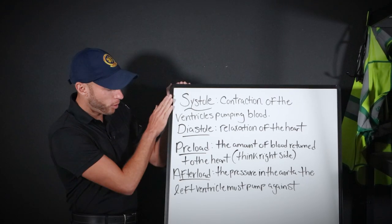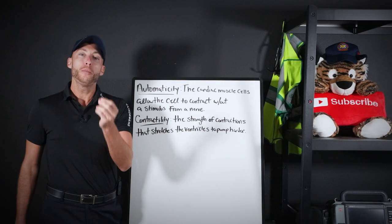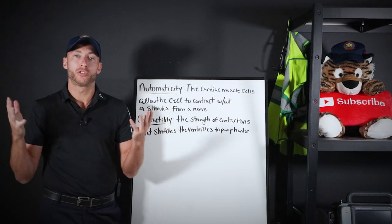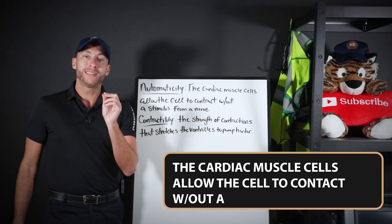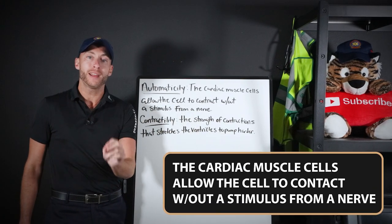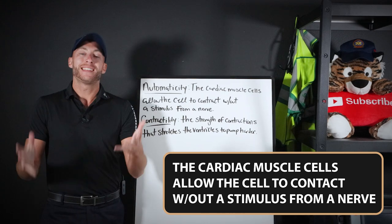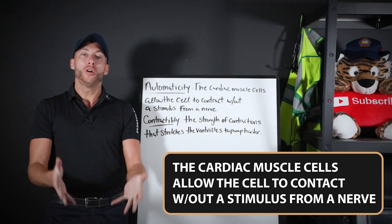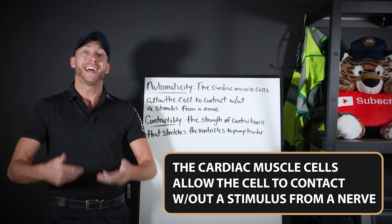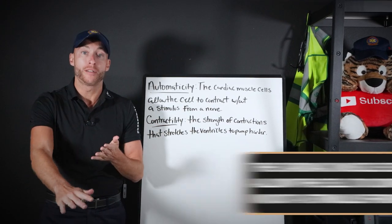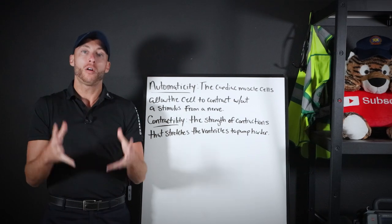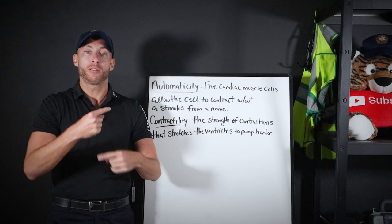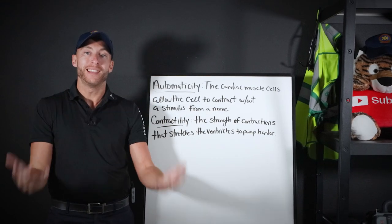This is why we go over all these key terms. Automaticity and contractility — sounds crazy, but it's so simple. Automaticity: cardiac muscle cells have a special property — they don't need the nervous system to tell them to fire off or take action. The cardiac muscle cells have automaticity and they automatically work.